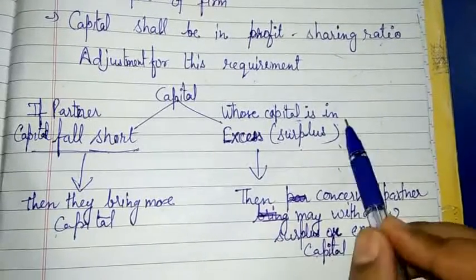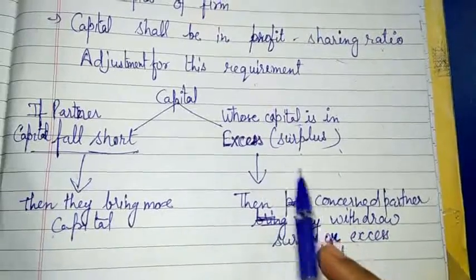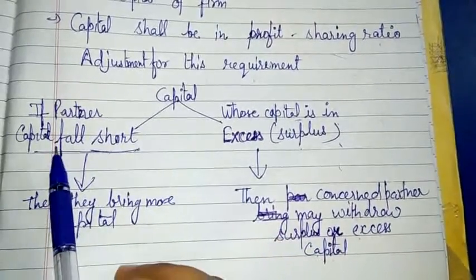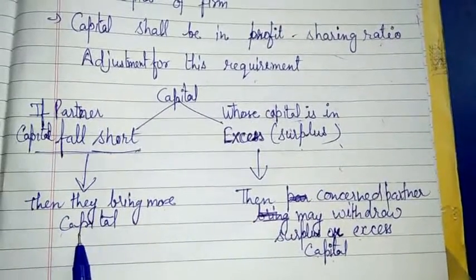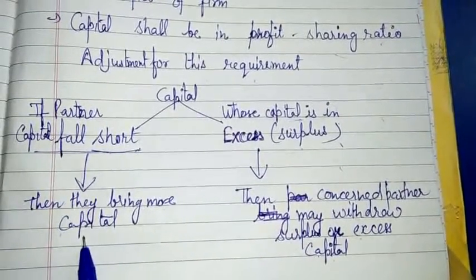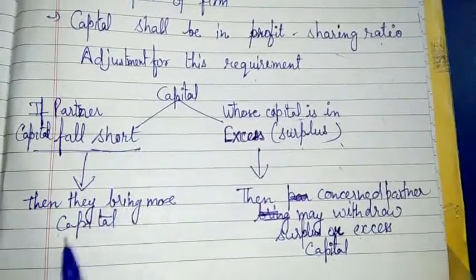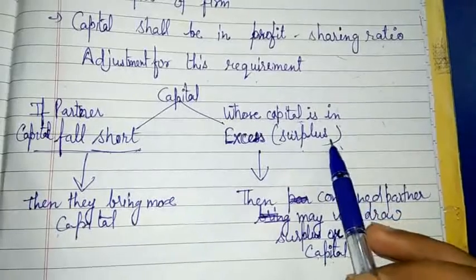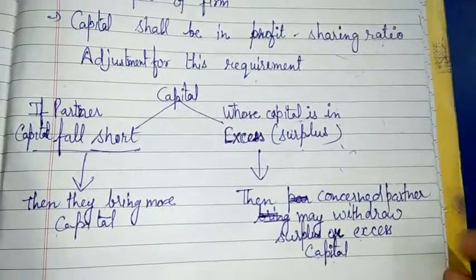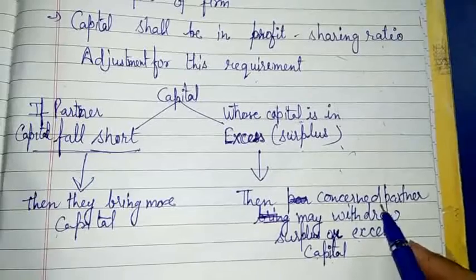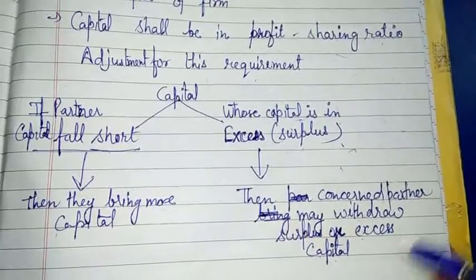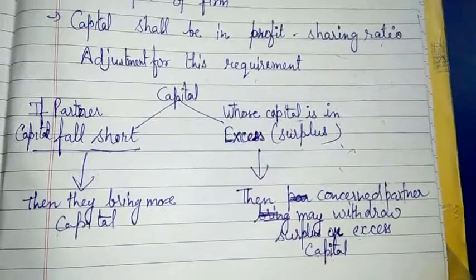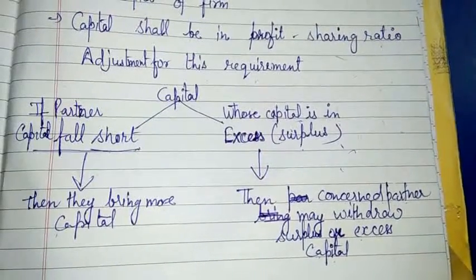अगर partner की capital में excess या surplus हो रहा है, तो उस partner को capital return कर दी जाएगी — concerned partner surplus और excess capital withdraw कर सकता है। और अगर adjustments के बाद capital में shortage हो रही है, तो उस partner से उतना ही cash मंगवाया जाएगा या वो cash bring करेगा firm में।